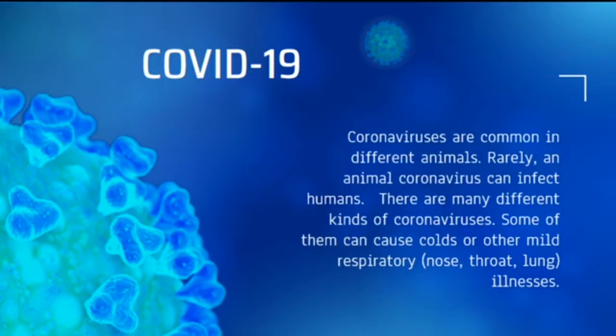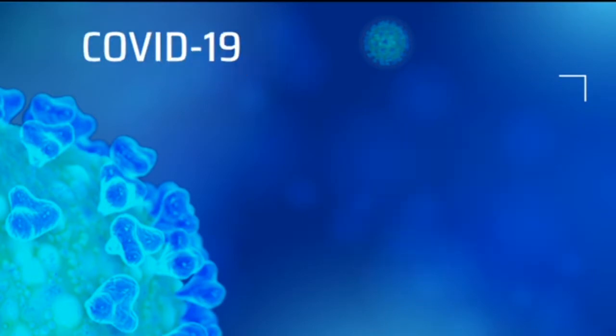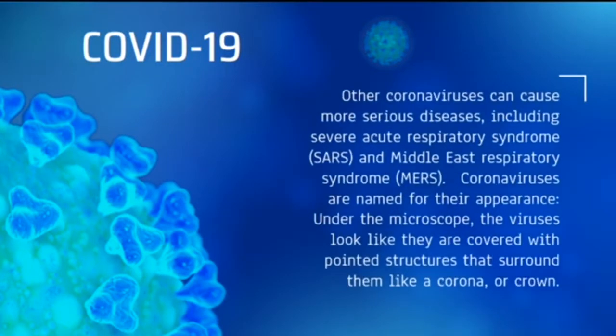Coronaviruses are common in different animals. Rarely, an animal coronavirus can infect humans. There are many different kinds of coronaviruses. Some can cause colds or other mild respiratory illnesses, while others can cause more serious diseases like SARS and MERS. Coronaviruses are named for their appearance — under the microscope, the viruses look like they are covered with pointed structures that surround them like a corona, or crown.